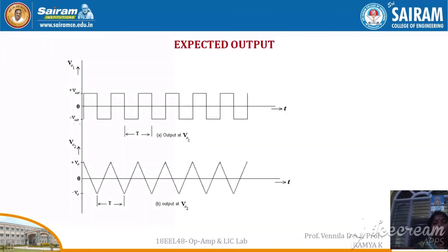This is the expected output waveform of the astable multivibrator. The astable multivibrator output is the square waveform, obtained at pin number 6 of the first op-amp at VO1. The next output is the triangular waveform, obtained from the integrator at VO2.